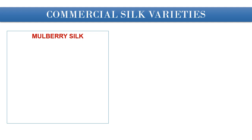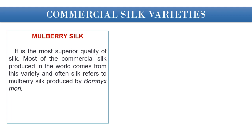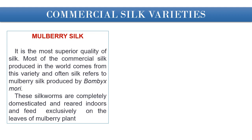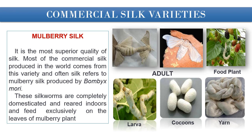We have four main commercial silk varieties. Firstly, mulberry silk — it is the most superior quality of silk. Most of the commercial silk produced in the world comes from this variety, and often silk refers to mulberry silk produced by Bombyx mori. These silkworms are completely domesticated and reared indoors and feed exclusively on the leaves of the mulberry plant. Shown here are the mulberry silkworm adult stage, food plants, final-instar larva, cocoons, and silk yarn.